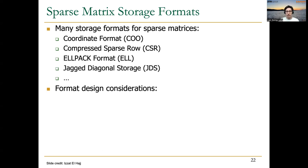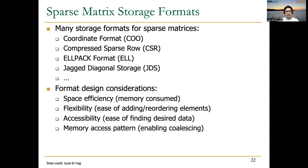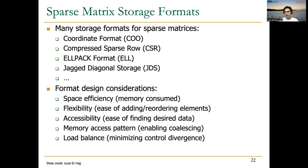When choosing a storage format, there are some design considerations to take into account. First is space efficiency — how much memory they consume. Second is flexibility, meaning the ease of adding or reordering elements. Then there is accessibility, or the ease of finding the desired data. There is also the memory access pattern — whether in a parallel system like a GPU they enable coalesced memory accesses. And finally, load balance: how much they can minimize control divergence, because sparse matrices don't have the same number of elements in each row, and that can be a source of divergence when different threads work on different rows.